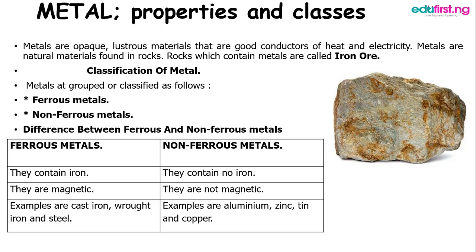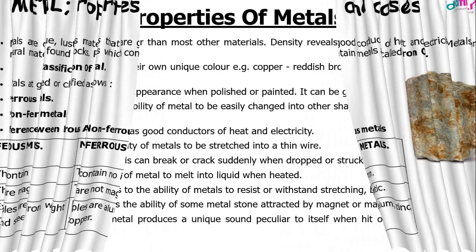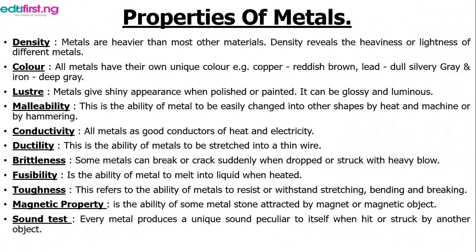The properties of metal — the things that make them different from other materials. First is density: metals are usually heavy. Then color: metals have their own unique color. Luster: metals shine when polished. Malleability: the ability of metals to be beaten into any shape when hot. Conductivity: metals are good conductors of heat and electricity. It's a bad idea to put any metal object into an electrical source. Also, if you forget your metal spoon inside your pot while cooking and then touch it, it burns your hand — because metals conduct heat very well.